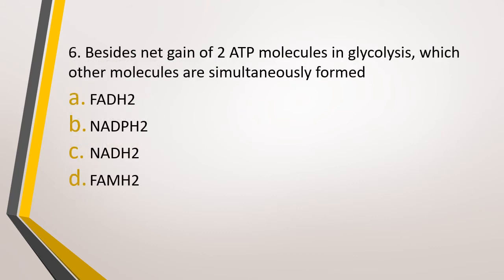Question number 6. Besides the net gain of 2 ATP molecules in glycolysis, which other molecules are simultaneously formed? The correct answer is Option C.